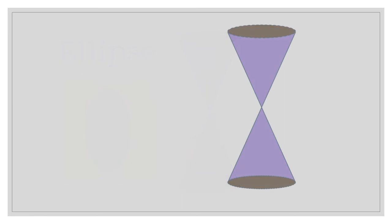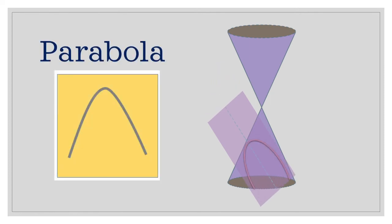If we continue tilting the plane, let's say this case would be the plane is parallel to the side of the cone. Therefore, we can now generate a parabola.